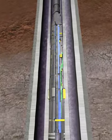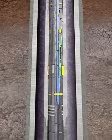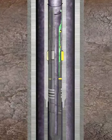The running tool is then ready for release. Jarring up shears the shear pin in the deprobe, allowing the running tool to be released.